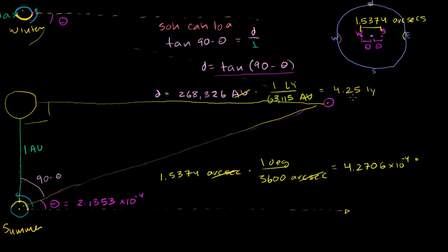That's about how far the closest star to the earth is. And the closest star has this very, very small apparent change in angle. As you go to further and further stars, that angle is going to get even smaller and smaller, until with really far stars even our best instruments won't be able to measure it. Hopefully you found that cool — you just used trigonometry and a good way to measure angles in the night sky to figure out how far we are from the nearest stars. That's pretty neat.